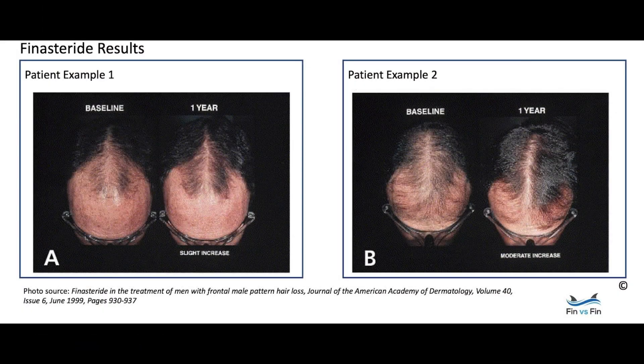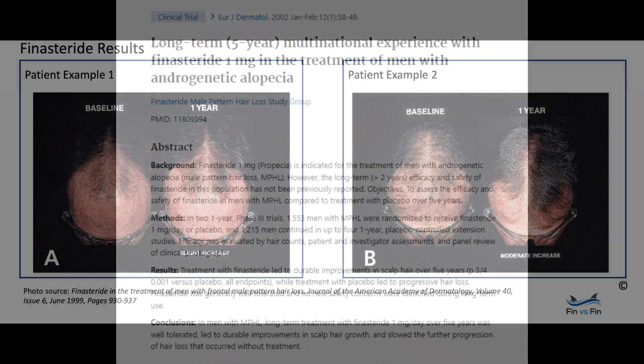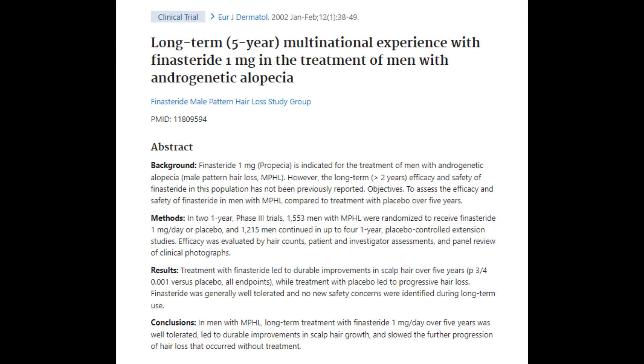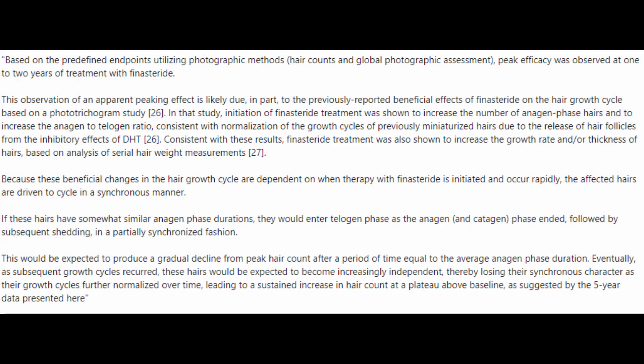After the initial improvement in hair growth, some individuals may experience a shedding period. This occurs because the hairs that entered the anagen phase together during finasteride treatment reach the end of their hair growth cycles and enter the telogen phase in a partially synchronized manner. As a result, these hairs shed simultaneously, leading to a temporary decline in hair count.